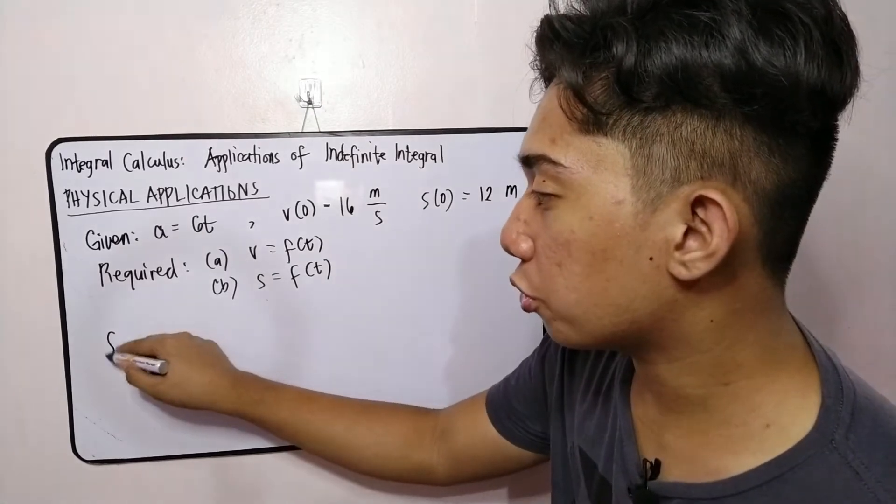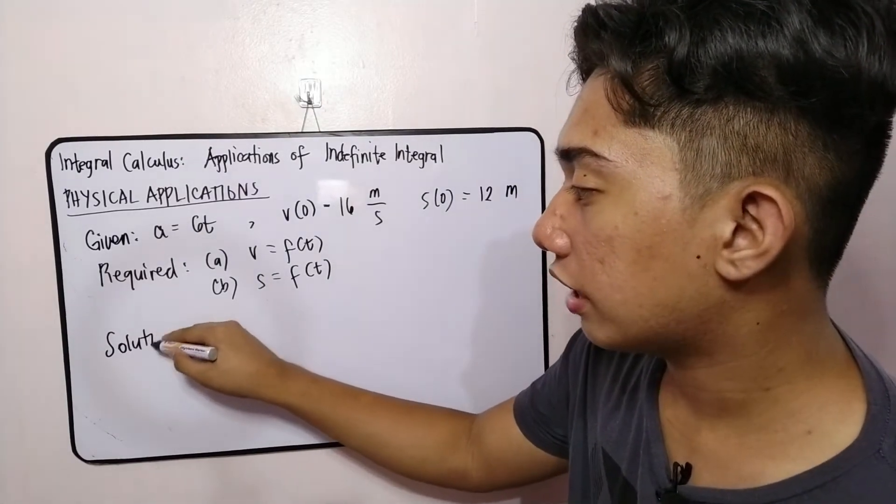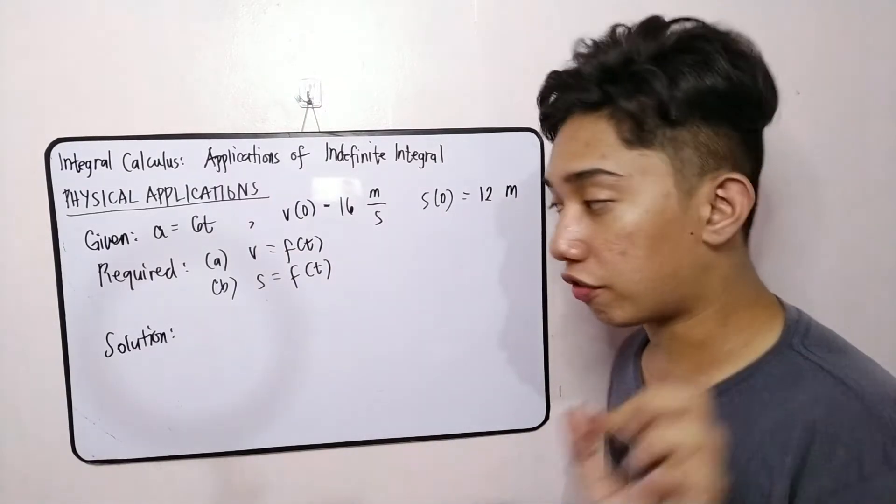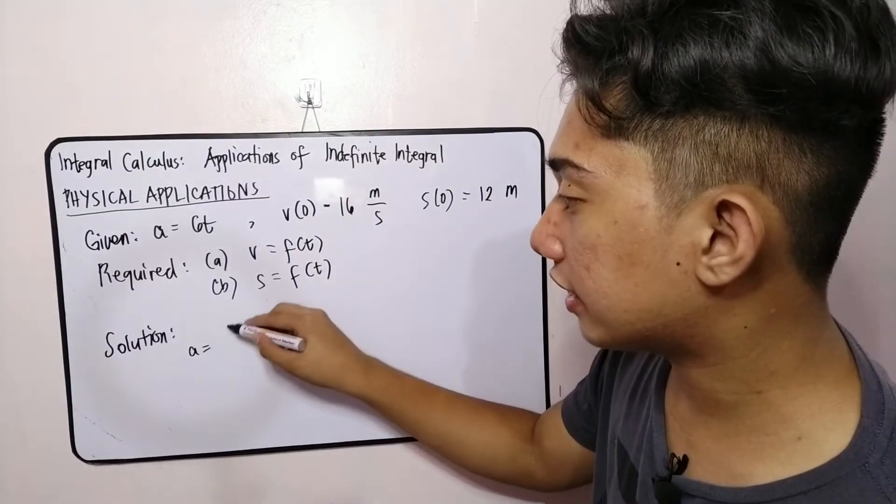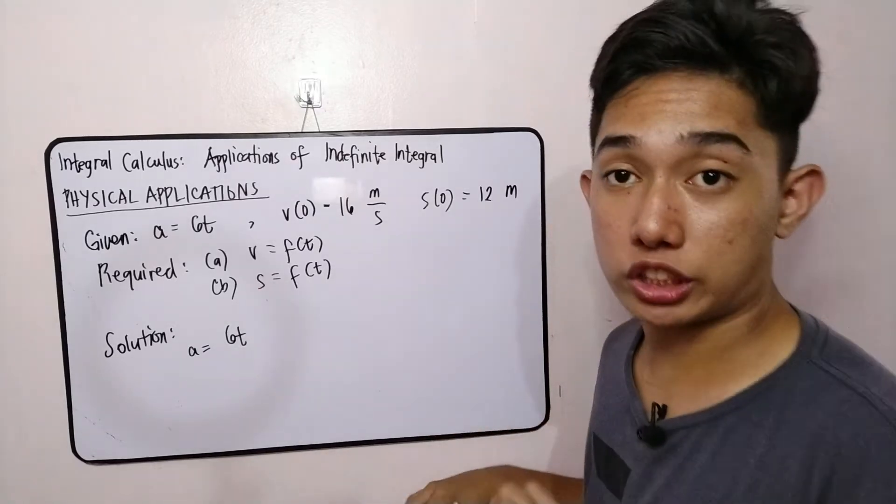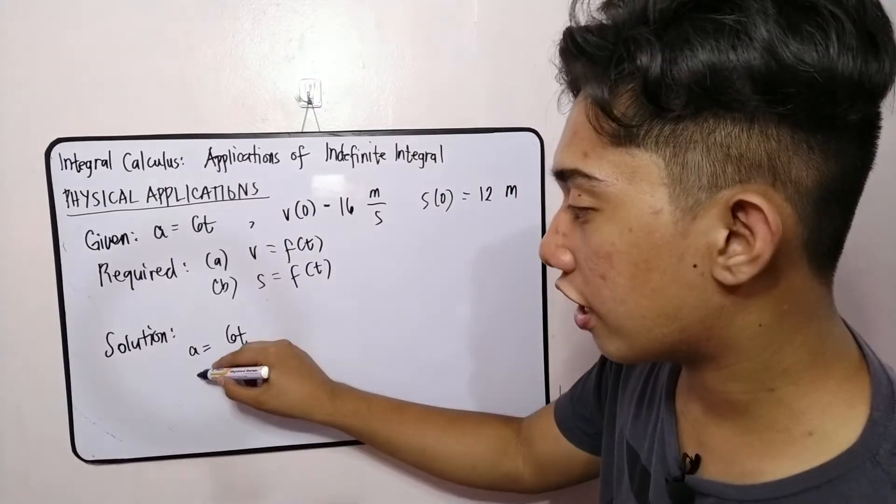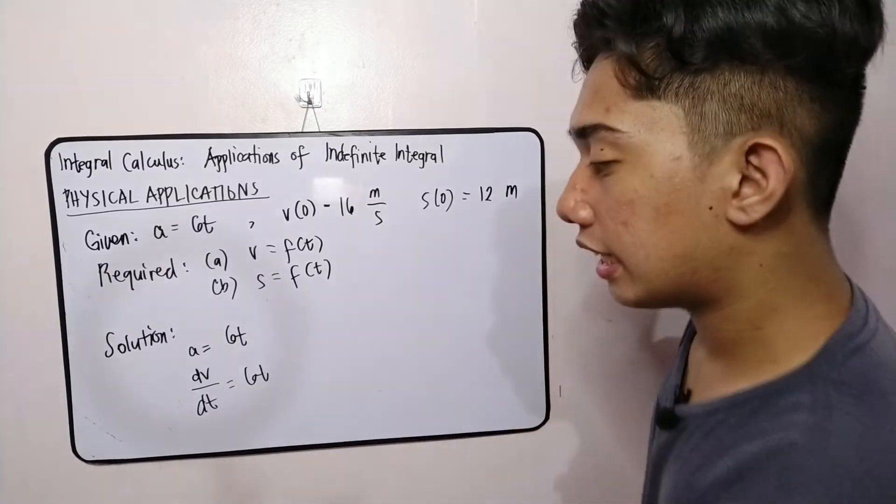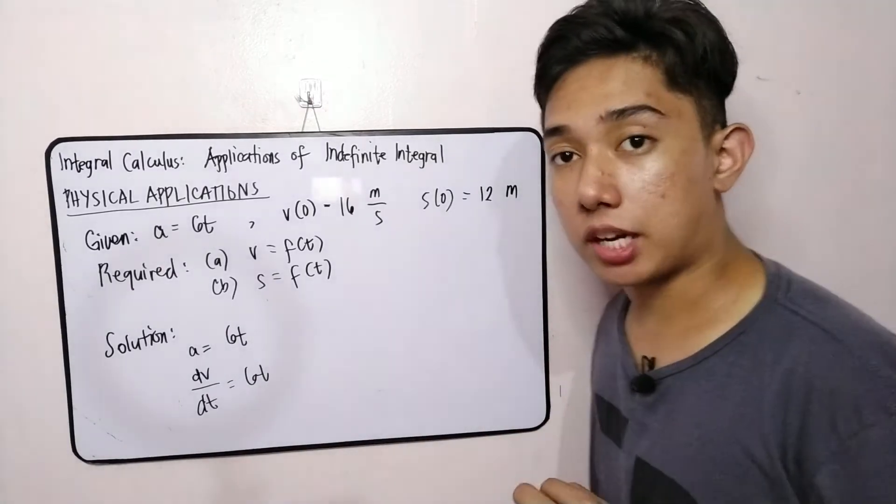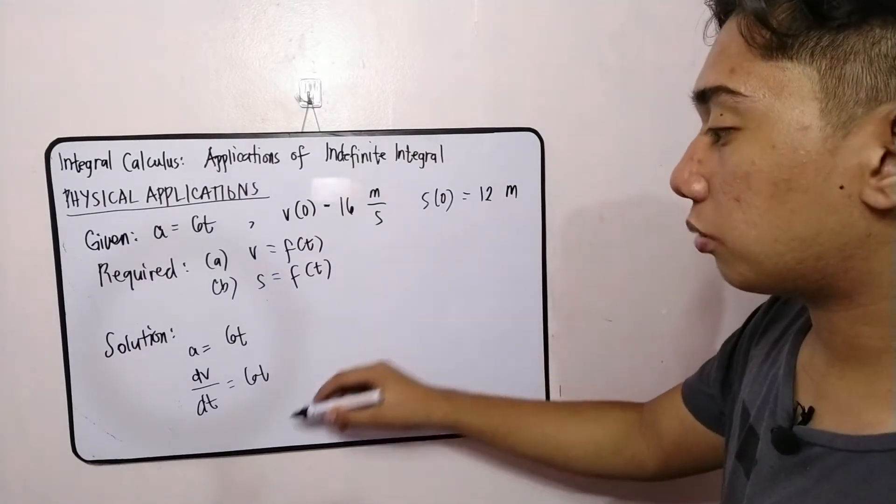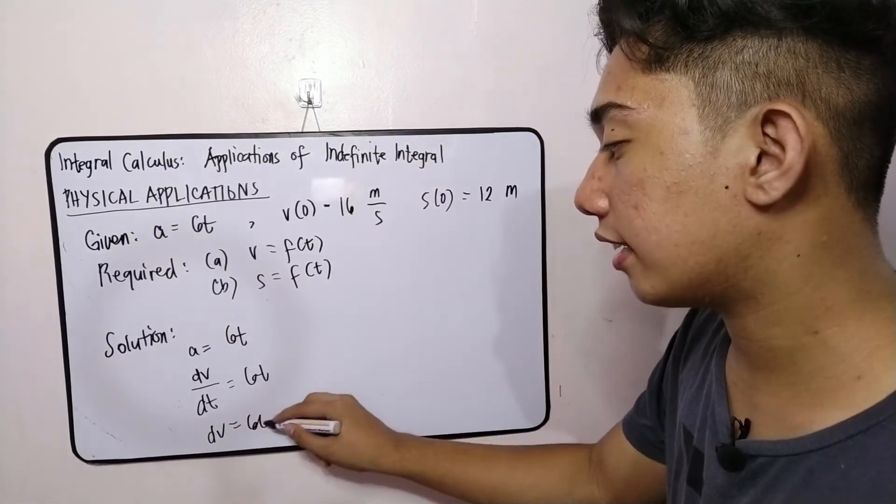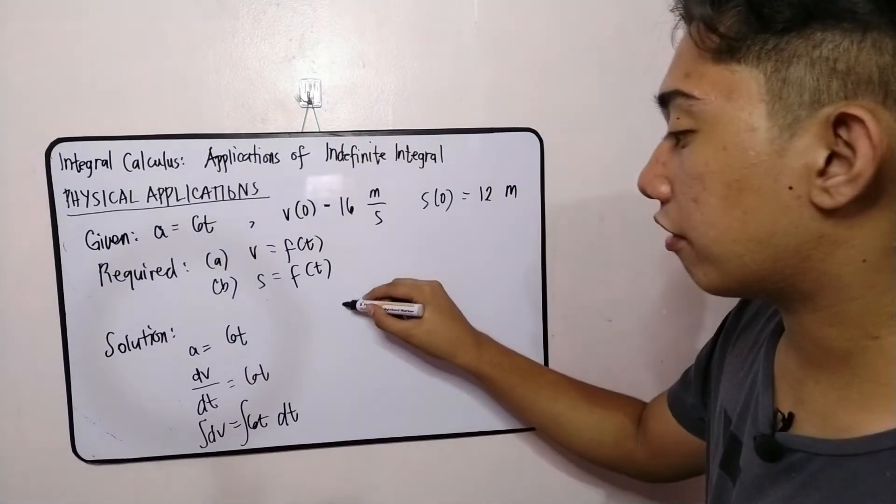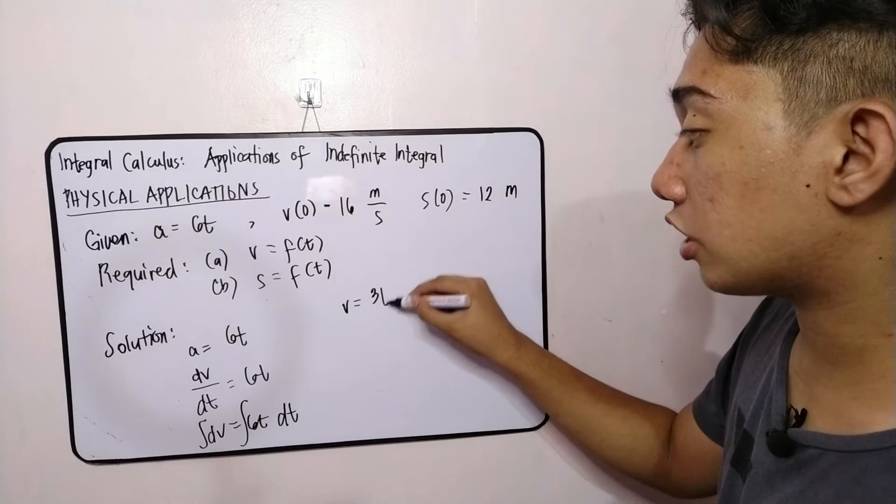For this solution, let's first start with the acceleration function. If you recall the acceleration function, it is the derivative of the velocity with respect to time. So therefore, I can substitute this one as dv over dt is equal to 60. Then, we will do variable separable differential equation. So it will leave us dv is equal to 60 dt. Integrating both sides, this will have v is equal to 3t squared plus c.